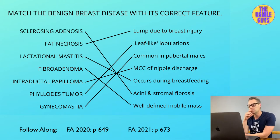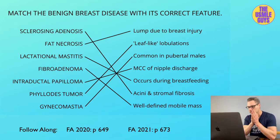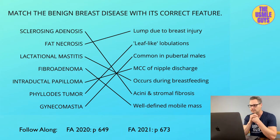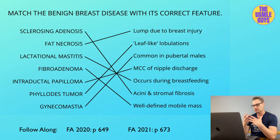Now let's look at some of the benign tumors, including the fibroadenoma, the intraductal papilloma, and the phyllodes tumor. The fibroadenoma is a small, well-defined, and mobile mass most likely seen in someone under 35 years of age. Under a microscope, you'll see fibrous tissue and glands. This is sensitive to estrogen changes, so when a woman is premenstrual or pregnant, the size and tenderness will increase.